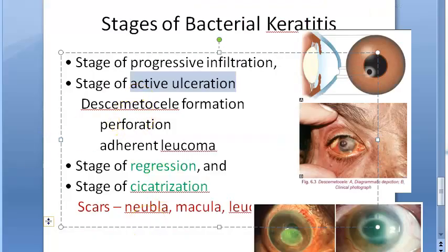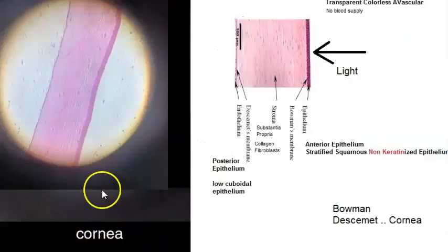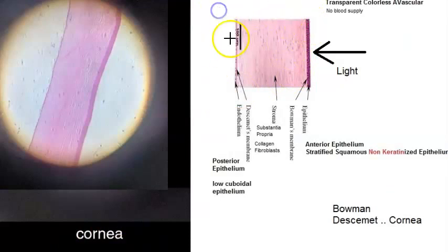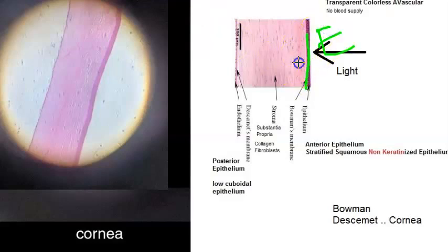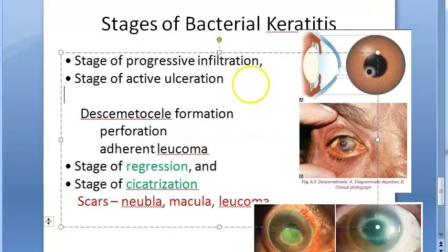In active ulceration, Bowman's membrane and the stroma can all get involved. Bowman's membrane is just behind the epithelium — it is the basement membrane for the epithelium. At this stage you can see hyperemia, meaning more blood and a network of vessels.